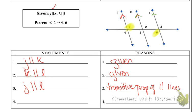Looking at angles one and six off of lines j and l cut by the transversal, those two angles are going to be congruent because they are alternate interior angles by their position.